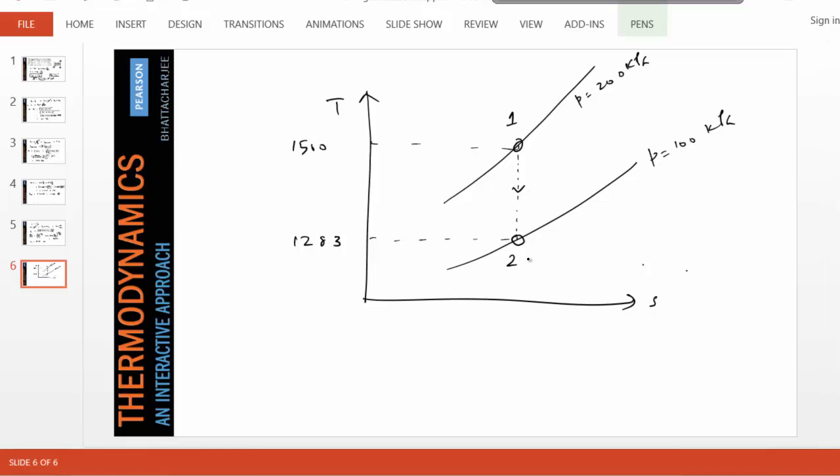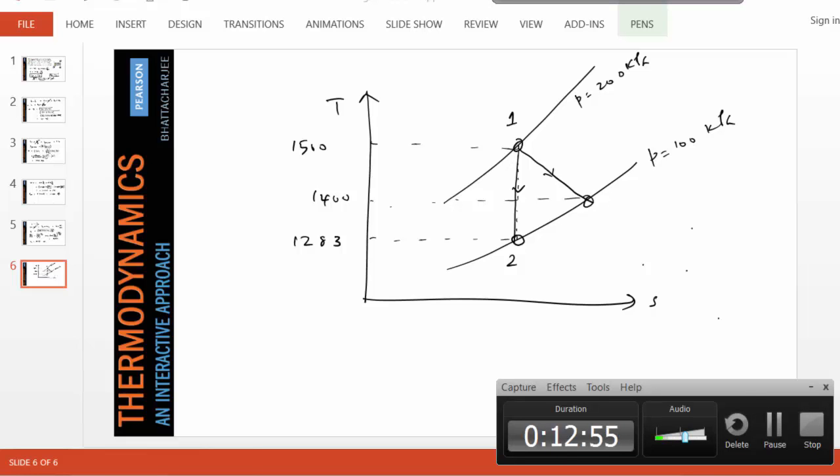So this is our isentropic line, and for the non-isentropic case, the temperature is higher. If you recall, it was 1400, somewhere here. As you can see, for the non-isentropic case, entropy has increased, and this is how the nozzle diagram looks on a TS diagram. So we'll stop here, and we'll use a separate solution using TESTcalc to make sure we got the correct answer.